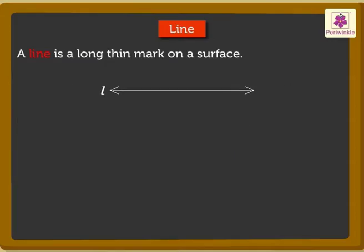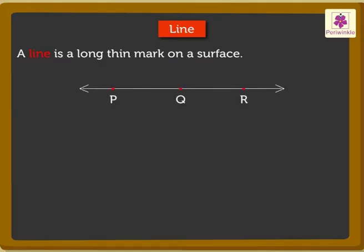Look at this line — we read it as line L. Now look at this line. Three points P, Q, and R are named on it. This line can be read using any two points — that is, line PQ, line PR, or line QR.